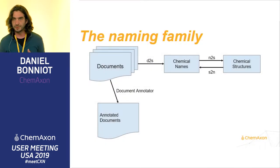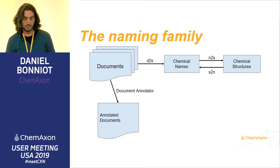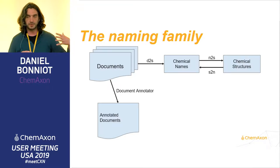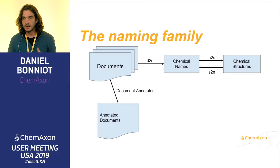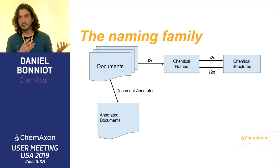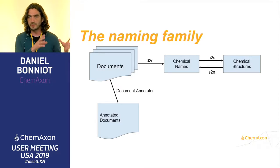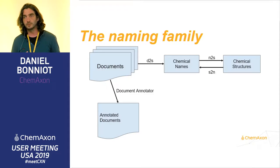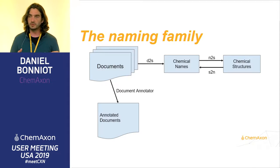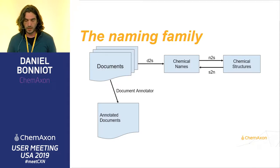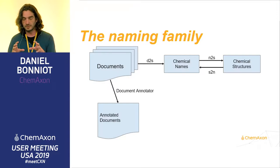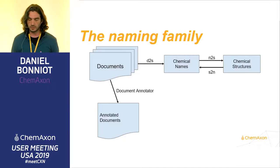So, a very high-level and quick overview of the naming tools. There are conversions in all directions. If you start from a document that contains chemistry, one of the things we can do is identify inside those documents the chemical names. We can also identify images using third-party tools, and so we can extract this information — identify the names — and then we have a list of names with metadata about where they are found in documents.